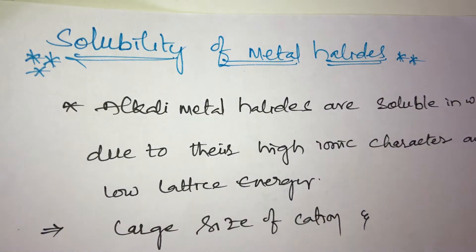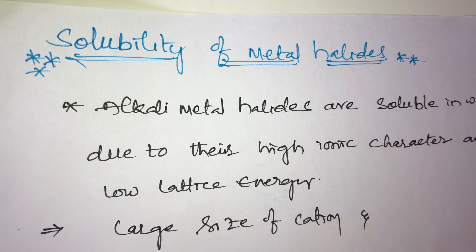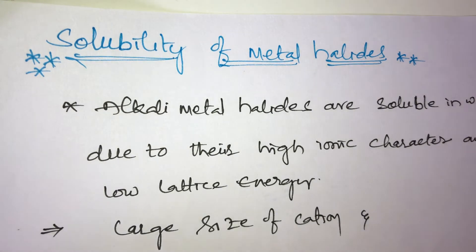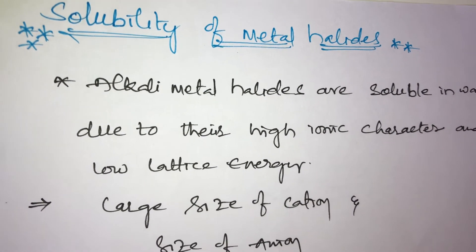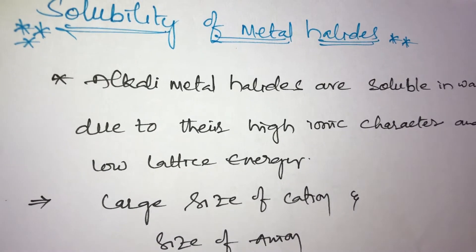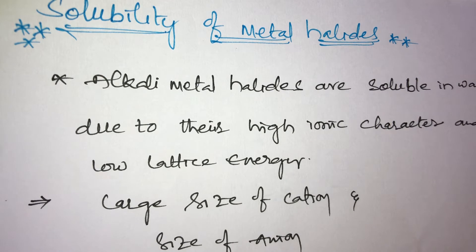Next, continuation of students from S-block elements — solubility of metal halides. Solubility of metal halides from S-block elements. First one is Group 1A elements, that is alkali metals. Alkali metal halides are soluble in water due to their ionic character. Solubility depends on ionic character and lattice energy.